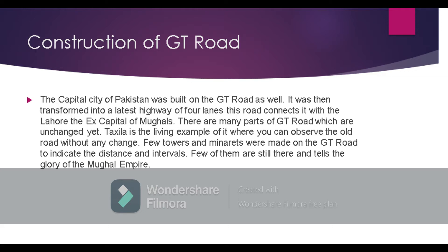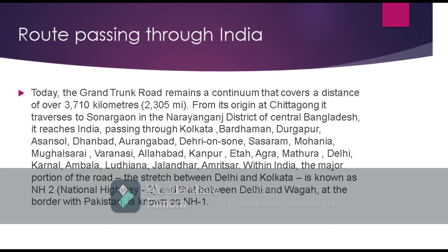Today the Grand Trunk Road remains a continuum that covers a distance of over 3,700 kilometers. From its origin at Chittagong, it transfers to Sonargaon in the district of central Bangladesh. It then reaches interior India, passing through Kolkata, Durgapur, Dhanbad, Aurangabad, Allahabad, Kanpur, Agra, and Delhi. The stretch between Delhi and Kolkata is known as National Highway 2.